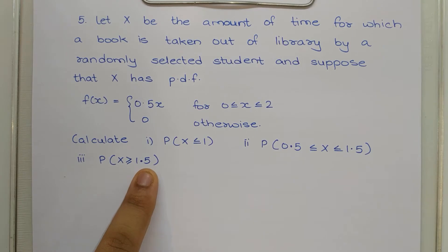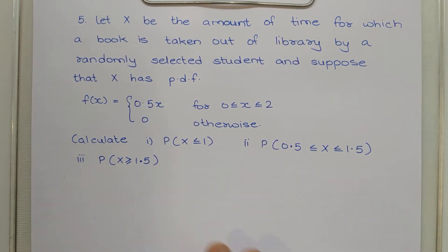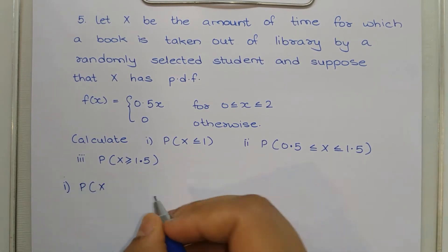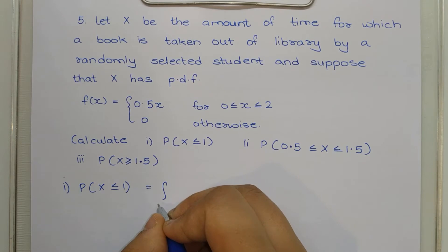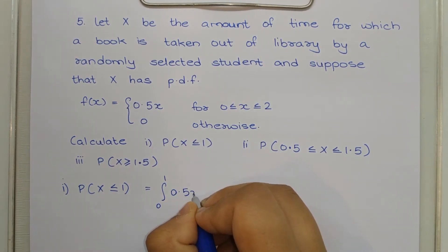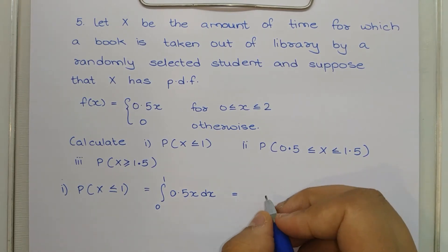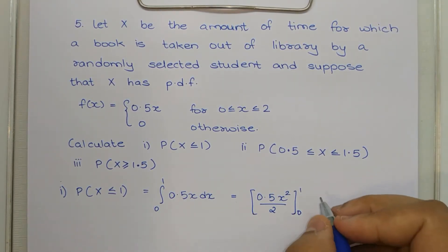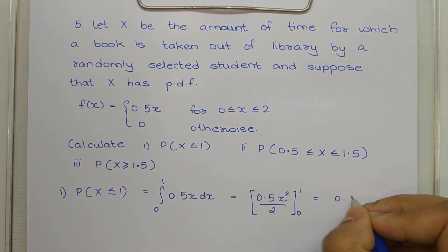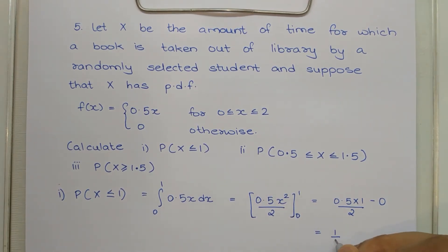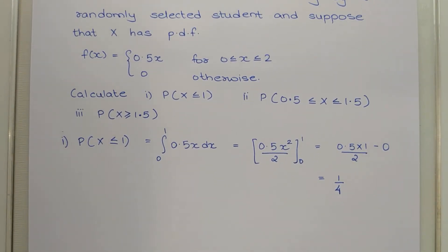We need to find all these values by integrating according to particular limits. For P(X ≤ 1), we integrate f(x) from 0 to 1. Since f(x) = 0.5x, this gives 0.5 · x²/2 evaluated from 0 to 1, which equals 0.5 · (1/2) = 1/4. So the answer is 1 upon 4.